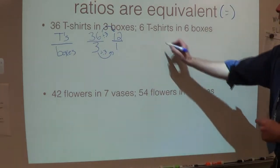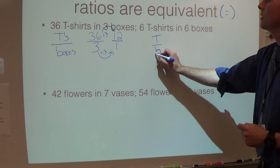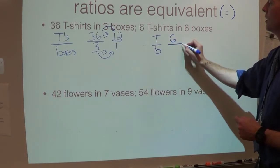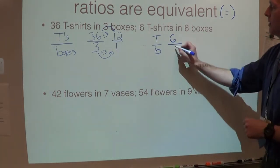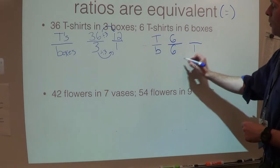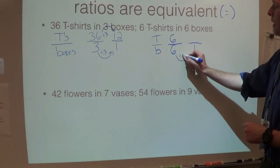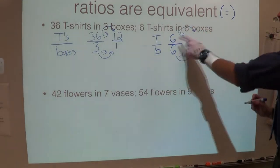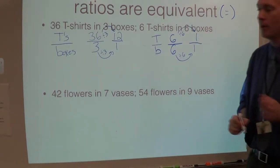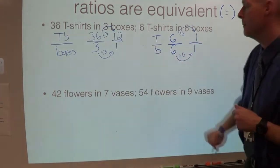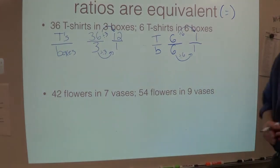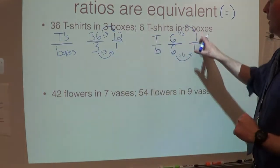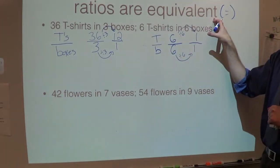Let's see the second ratio. We're going to do t's over boxes, and I have six t-shirts in six boxes. So my t's is six, my boxes is six. We want this over one. How do I get from six to one? Divide by six. And what do I do to the top? I divide by six as well. Six divided by six is one. So let's explore these unit rates — I see a unit rate of 12 to one and a unit rate of one to one. Are those equivalent? No, they're not the same. So in this case, the unit rates are not equivalent, therefore the ratios are not equivalent.